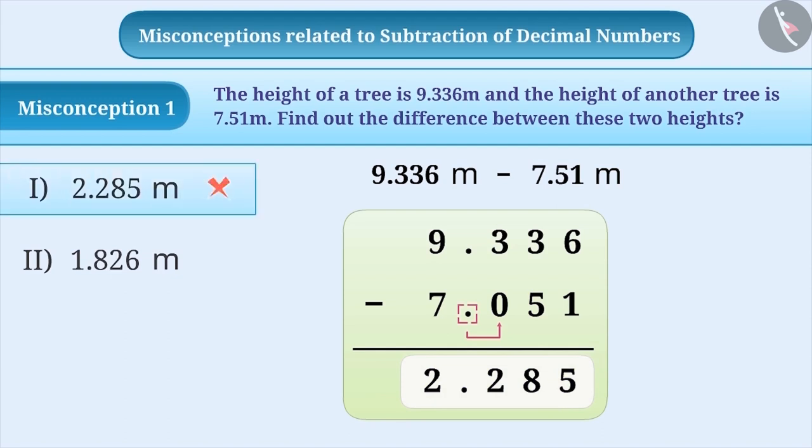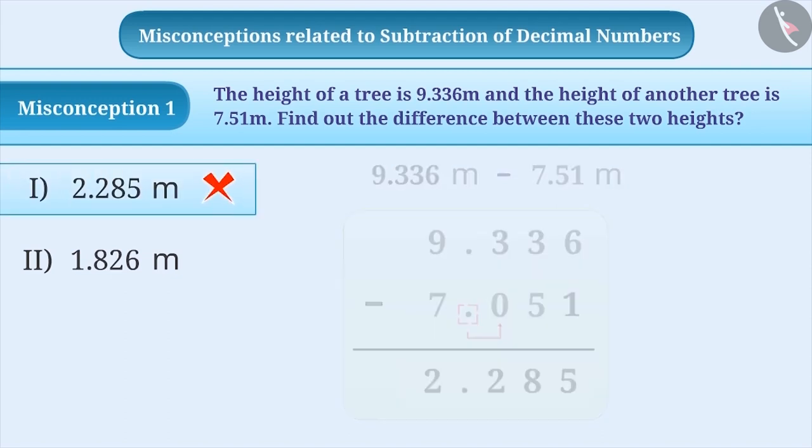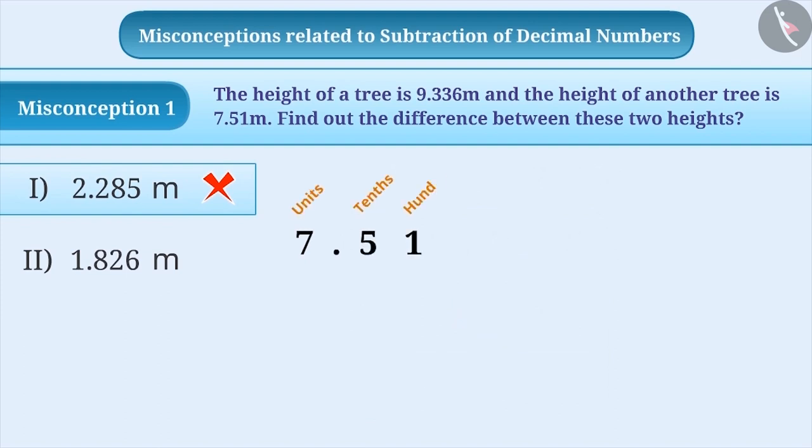Therefore, option 1 is incorrect. In 7.51, there are 7 units, 5 tenths and 1 hundredths.